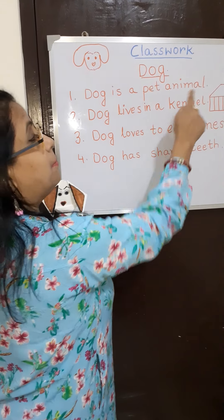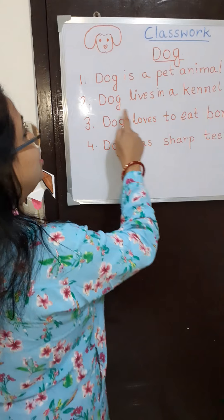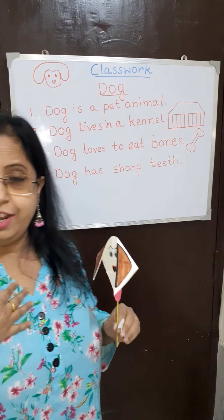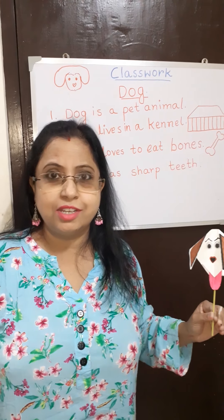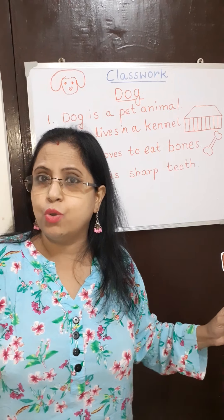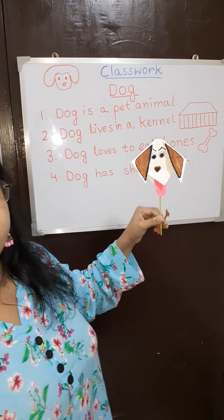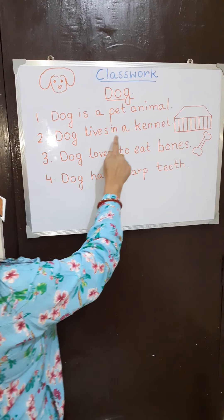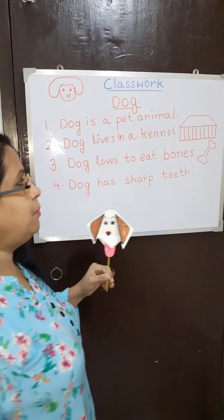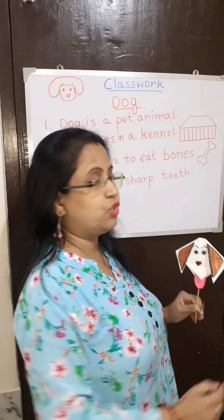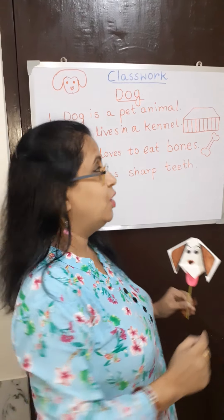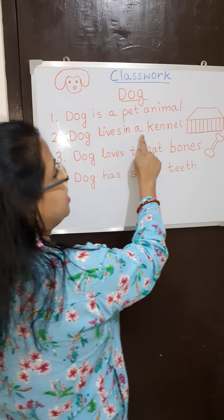So dog is a pet animal. Dog lives in a kennel. We live in our houses — we learnt in the previous class that we live in our house. So where does a dog live? Dog lives in a kennel. A kennel is somewhat like this — maybe I am not totally correct to draw a kennel, but it is somewhat like this.